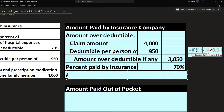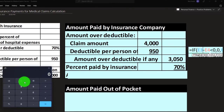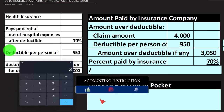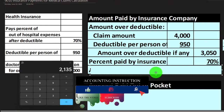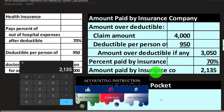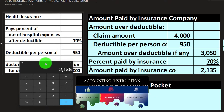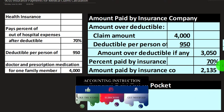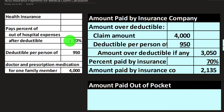Then we note that 70% is going to be paid by the insurance company. So we calculate $3,050 times 0.7, meaning the insurance company is going to be paying $2,135. Note that if you set this up in Excel, you'd want to be pulling the data from your data set so that you can change inputs and have the table populate automatically for different sets of circumstances.